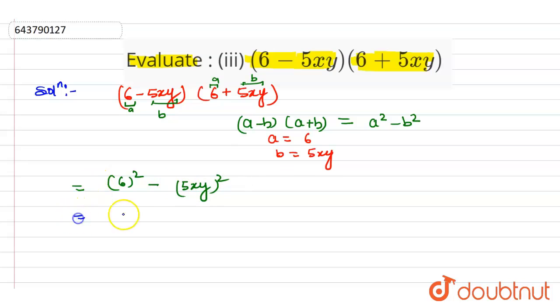So on solving it we will get 36 minus 25x square y square. So this is the solution. Thank you students.